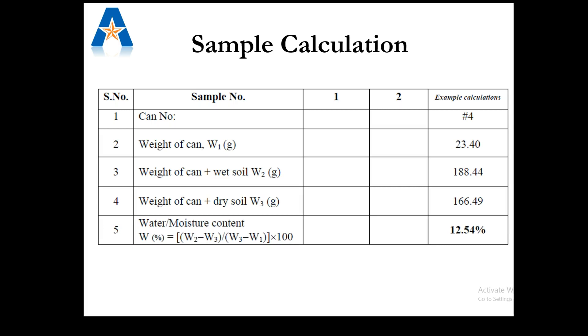Moisture content can be determined by dividing the weight of water with the weight of dry soil. The detailed procedure for this experiment has been discussed in the demonstration video.